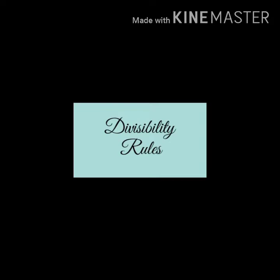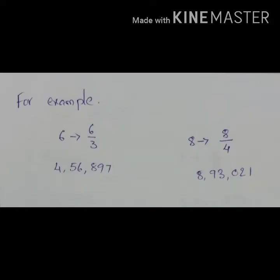Divisibility rules of whole numbers are very useful because they help us to quickly determine if a number can be divided without doing long division. For example, if I ask is 6 divisible by 3, it is easy to calculate. But if I ask is 4,56,897 divisible by 3, it takes much more time to calculate. Similarly, 8 by 4 is easy, but checking if 8,93,021 is divisible by 4 takes much more time.